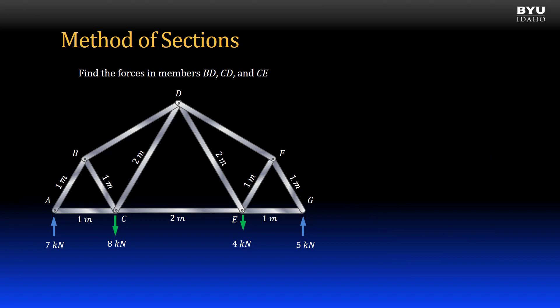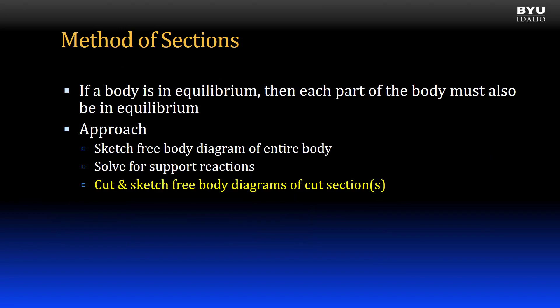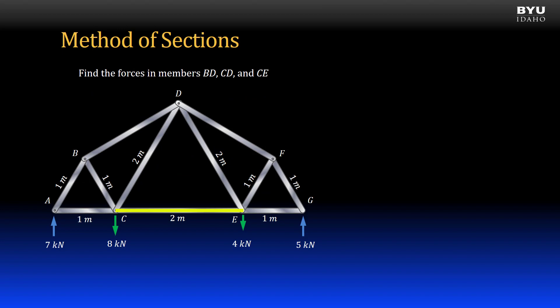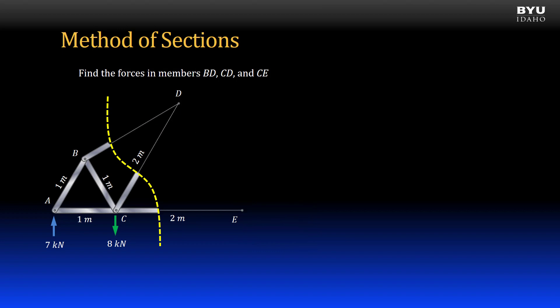Here is my revised free body diagram with the support reactions shown correctly. Our next step is to make a cut through the truss and sketch a free body diagram of the cut section. We are interested in members BD, CD, and CE, so we will try to cut through all of these members with a single cut. Whenever we cut a truss, we cut it completely through. I draw only the members on one side of the cut — the simpler side — and show the cut members as tension forces acting in the direction of the members. My section free body diagram is complete.